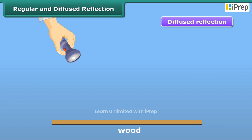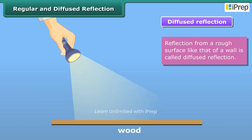Diffused or irregular reflection takes place when a ray of light is incident on a surface such as a wall or wood, which is not smooth or polished. An image is not formed in this case.